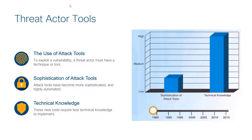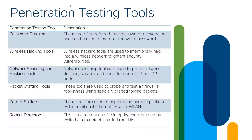Let's jump into threat actor tools, and we kick it off with a graph — a quick history lesson. Back in the day, the sophistication of attack tools was low, meaning you needed significant technical knowledge to perform an attack. But nowadays, as tools become more powerful, sophisticated, and automated, the sophistication is high while the technical knowledge required is low. Threat actors with less knowledge can now perform the same or more powerful attacks against targets.